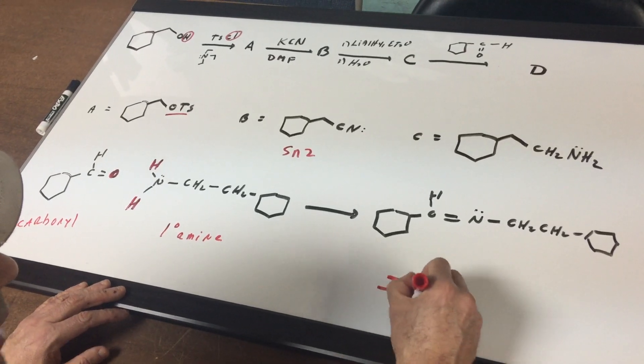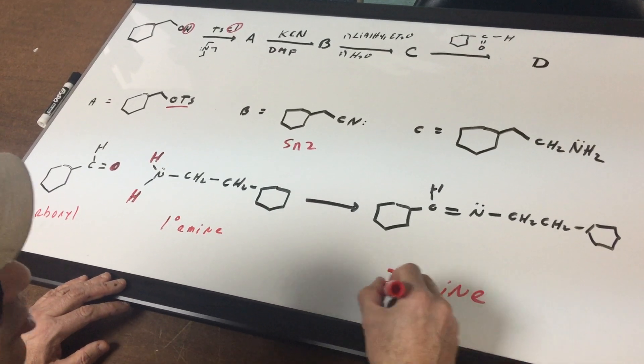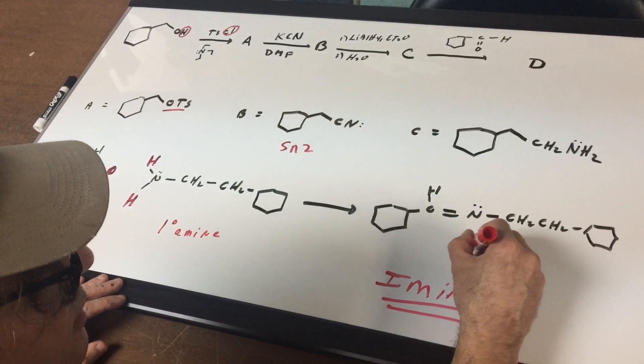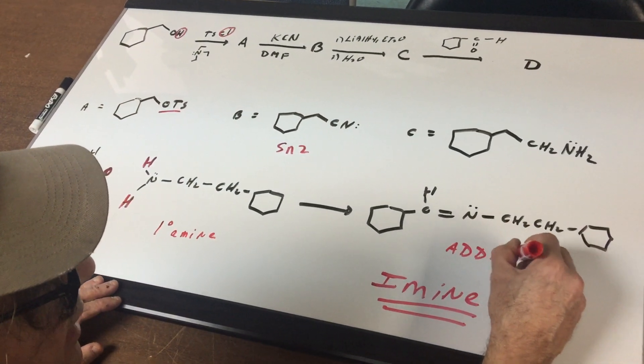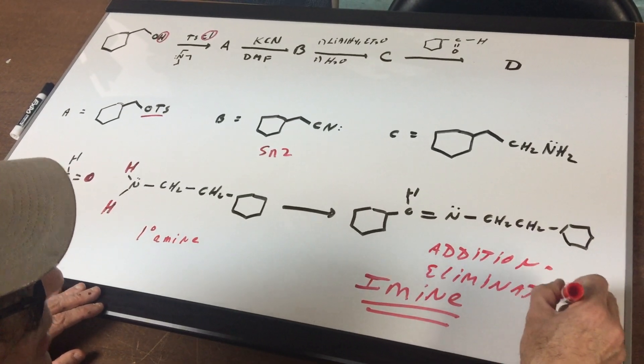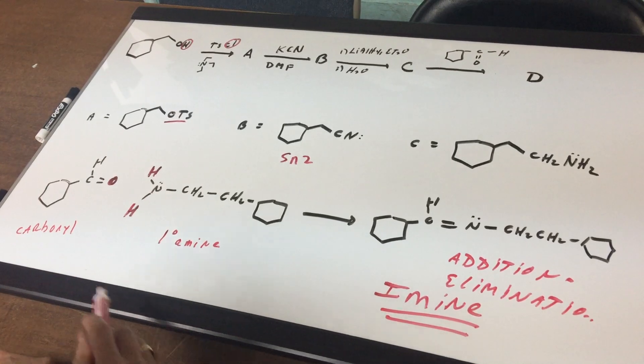I hope you remembered, it forms an addition-elimination mechanism to form an imine. So whenever you form an imine, it's called an addition-elimination mechanism. And what's going to happen is you're going to split off water.